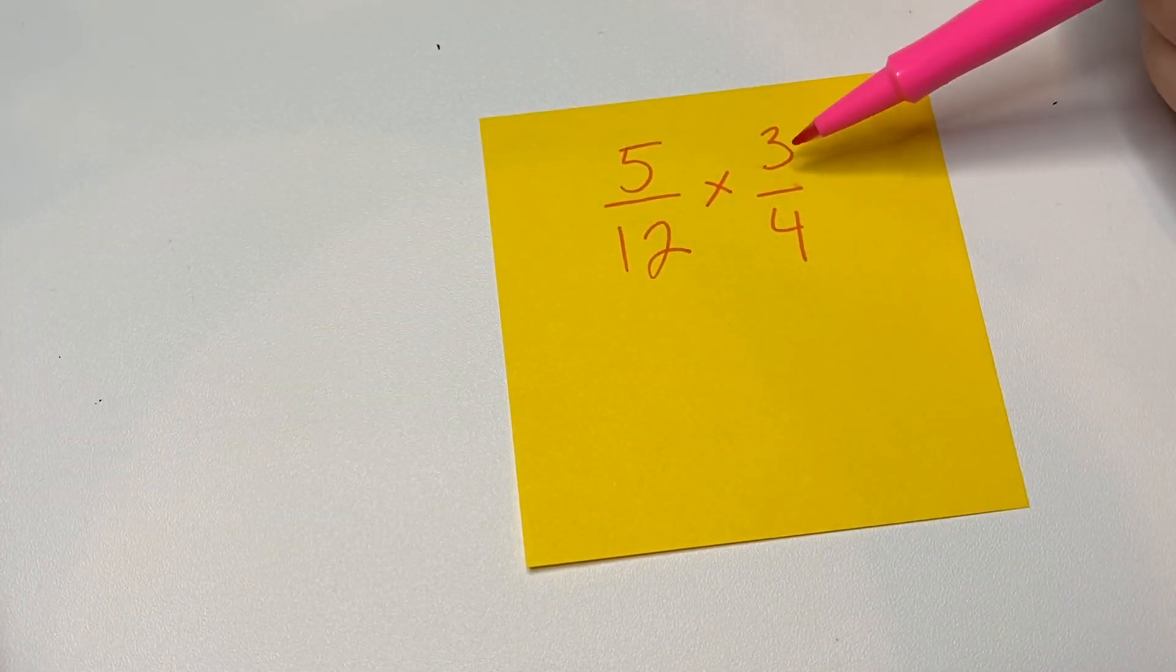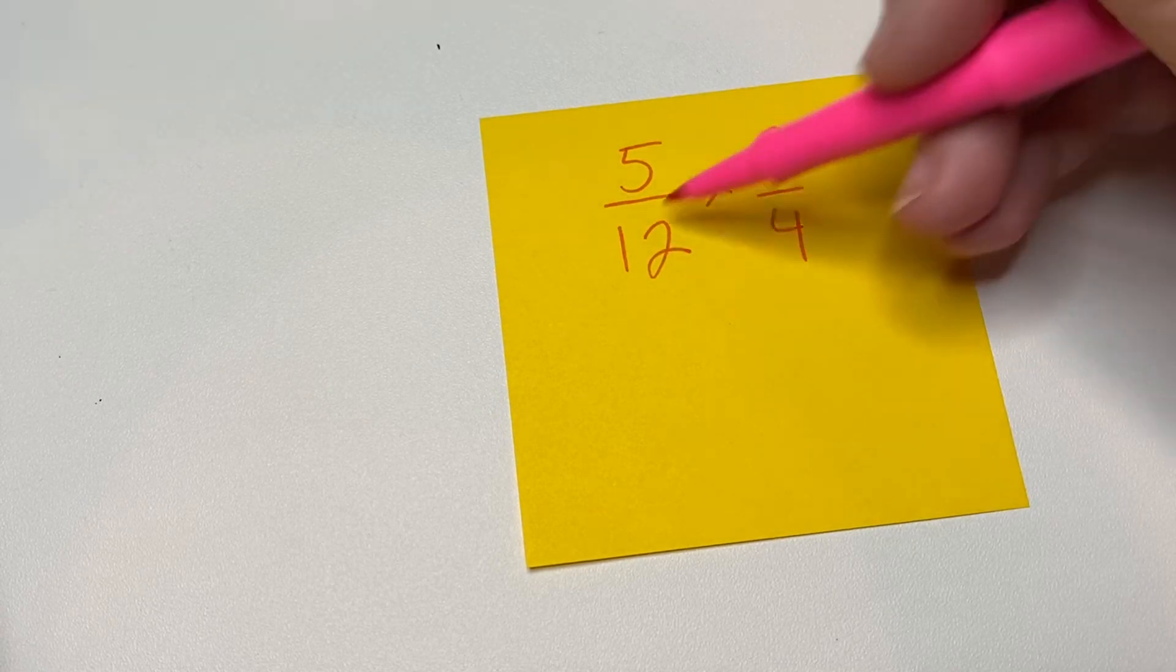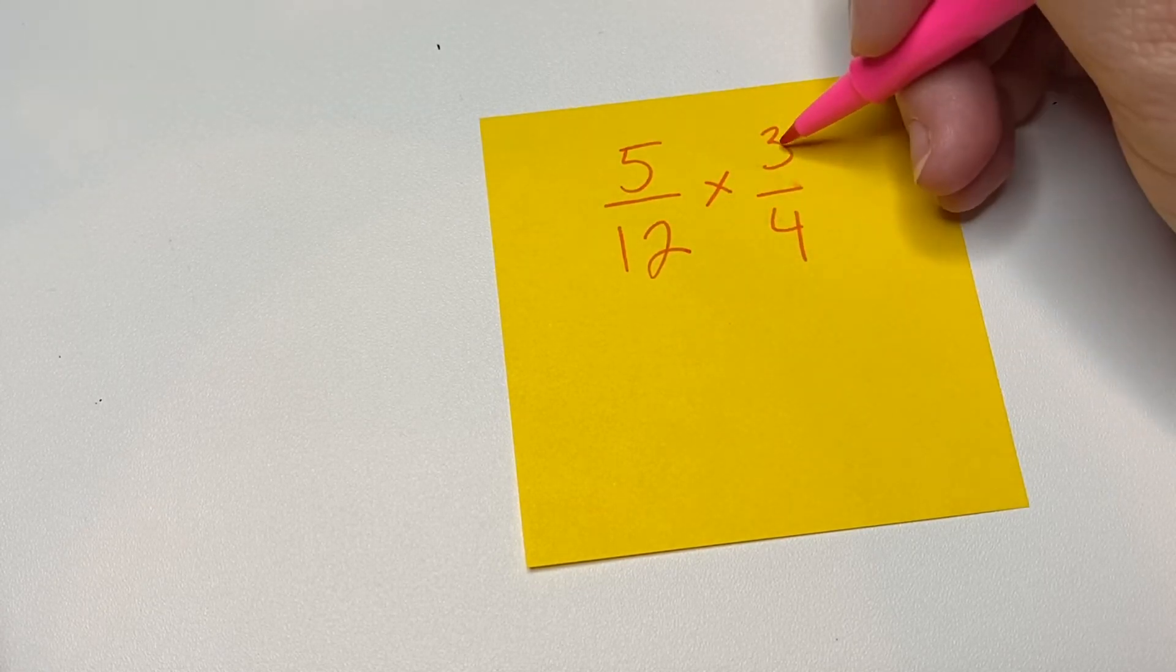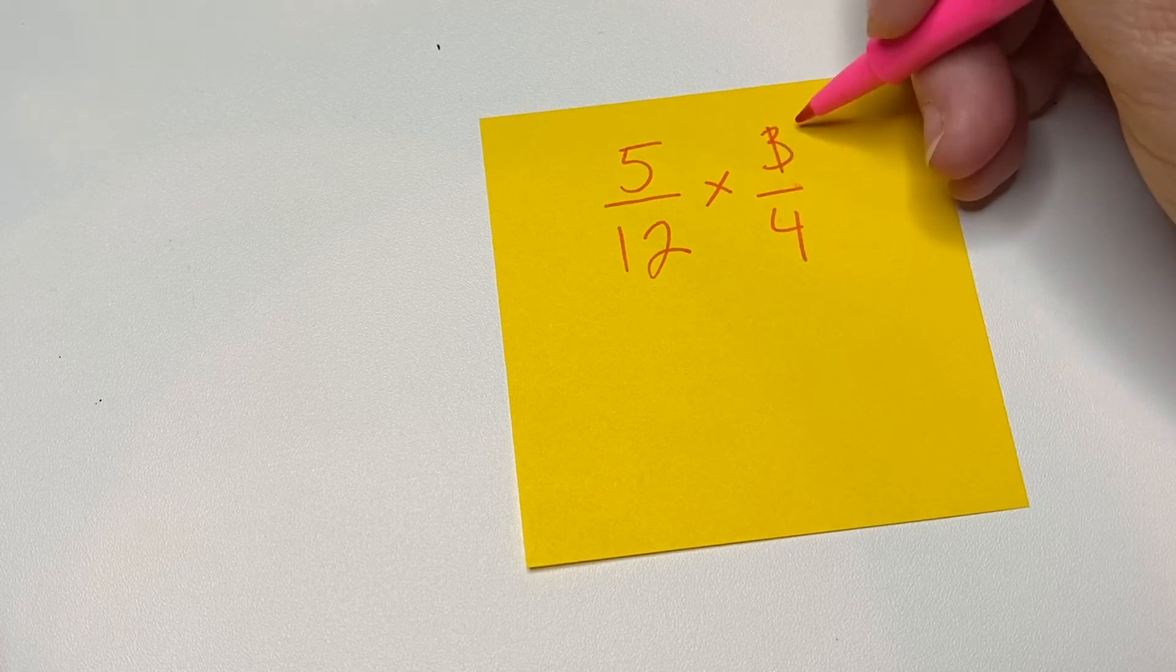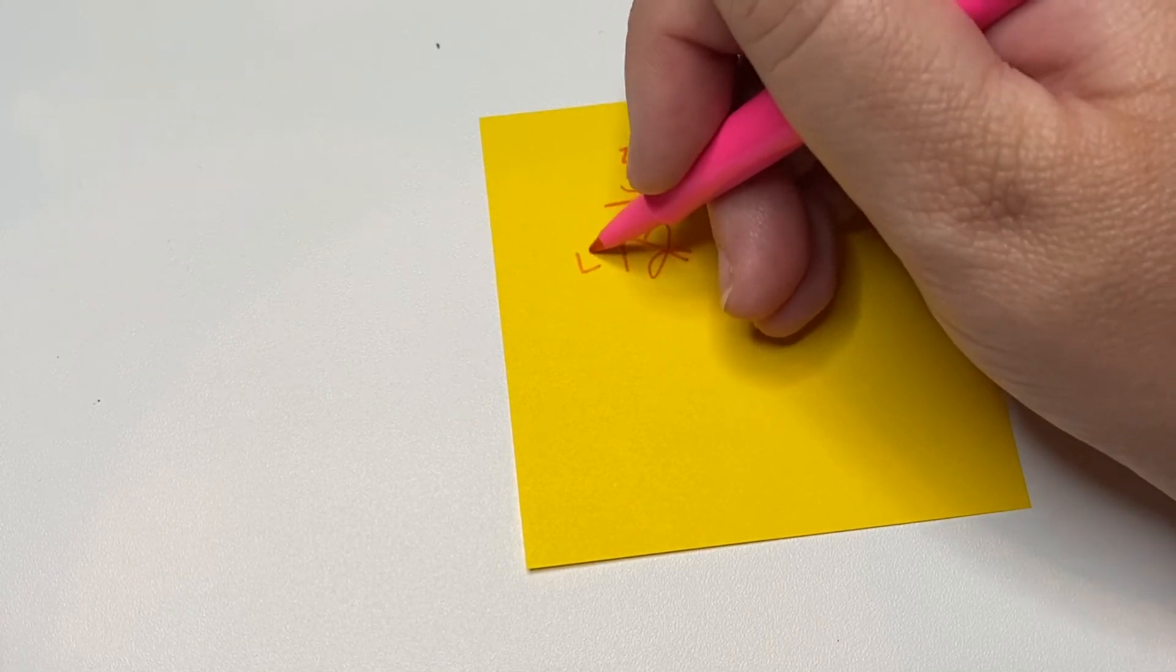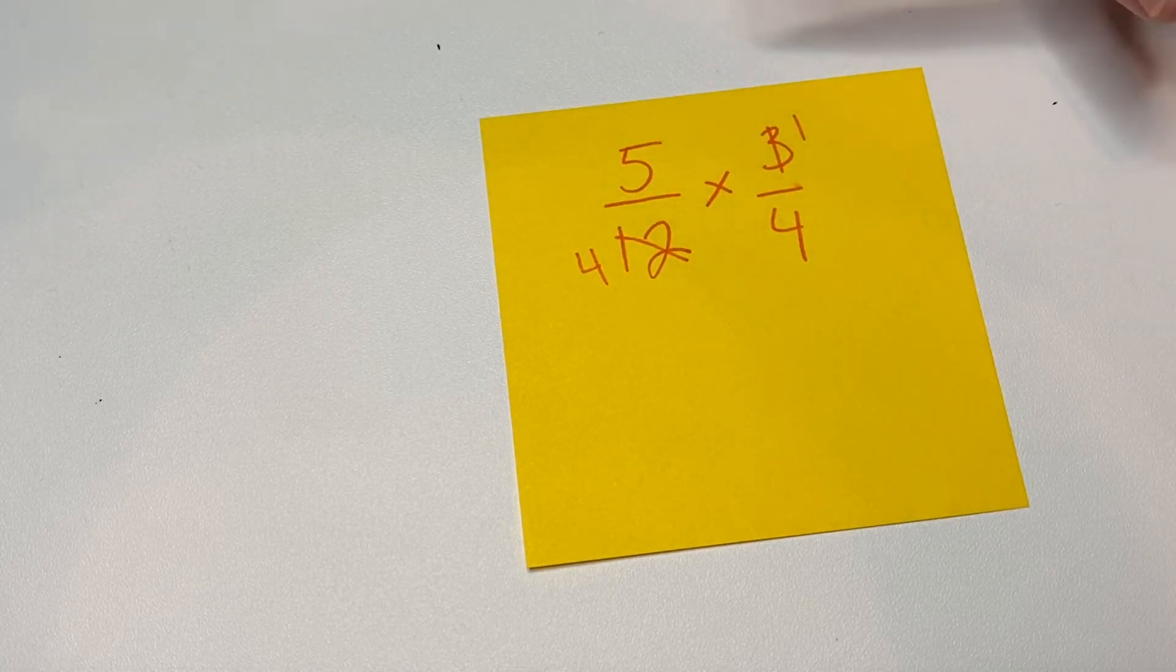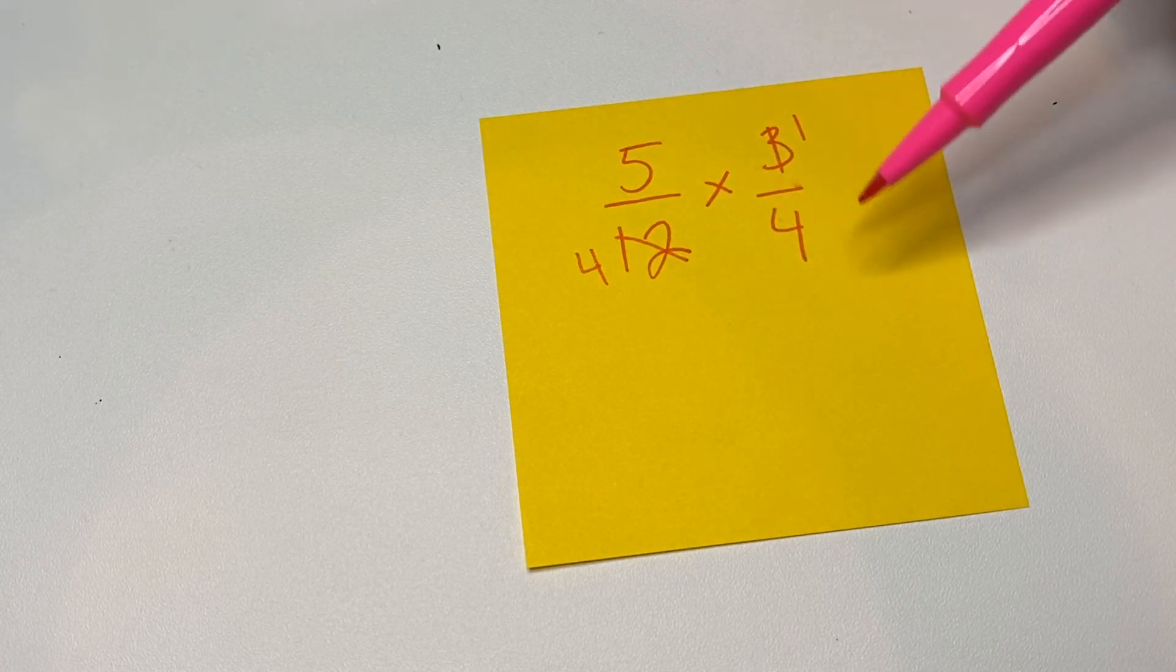Okay. So does three go into 12? Yes. So three goes into 12, or the common factor is three. So three goes into three one time. Three goes into 12 four times. These do not share a common factor, so we can't do anything with those. So now we have five fourths times one fourth.